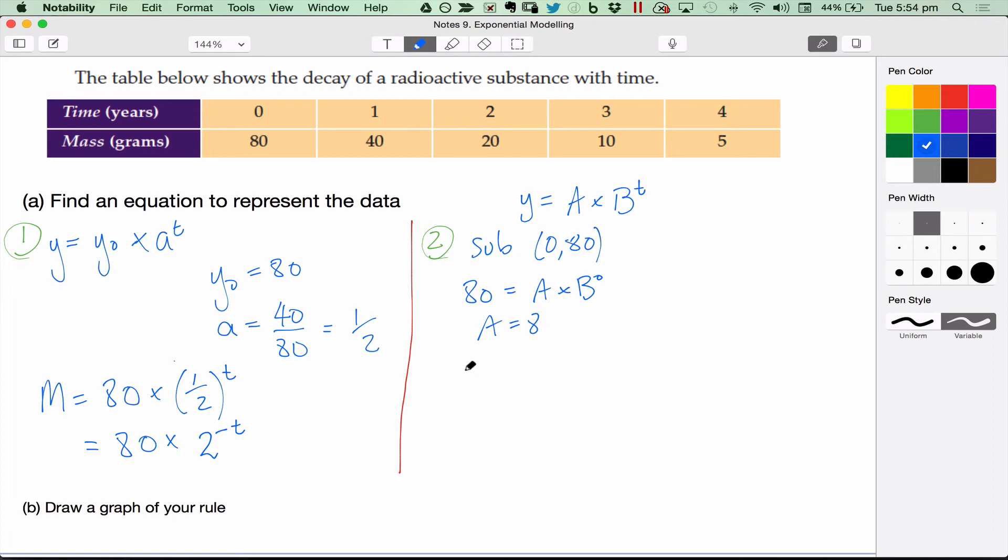Y equals 80 times b to the t, sub 1, 40. 40 equals 80 times b to the 1, b equals a half. And we end up with m equals 80 times a half to the t, which is the same as what we've got over here.